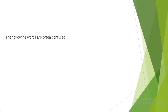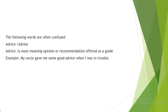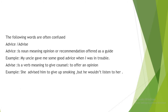We have more examples. 'Advice' with a C and 'advise' with an S. 'Advice' with a C is a noun meaning opinion or recommendation — for example: 'My uncle gave me some good advice when I was in trouble.' 'Advise' with an S is a verb meaning to offer an opinion — for example: 'She advised him to give up smoking, but he wouldn't listen to her.'